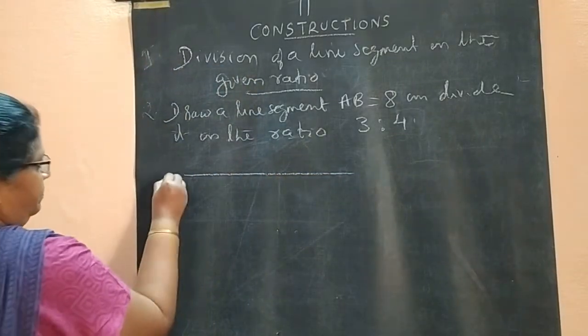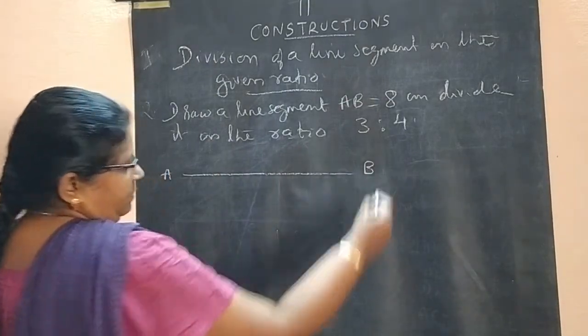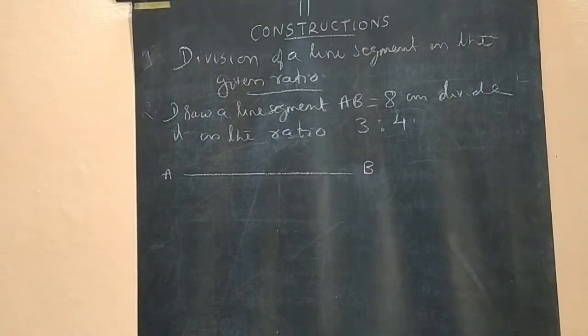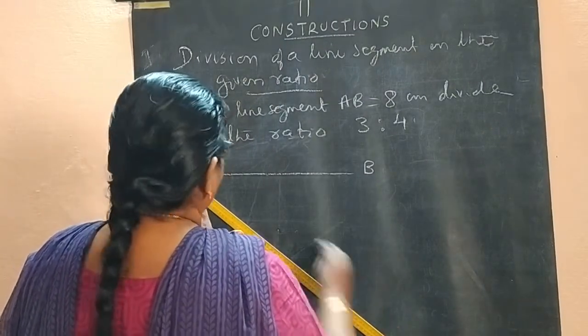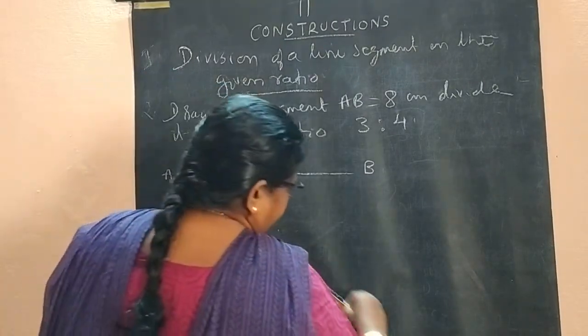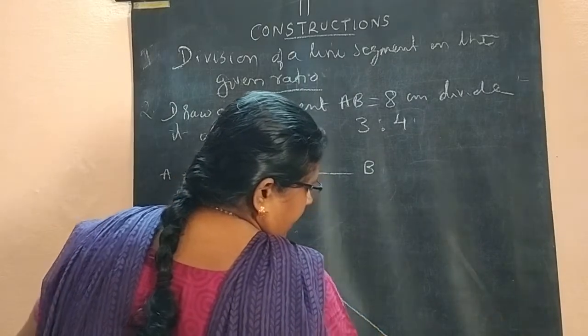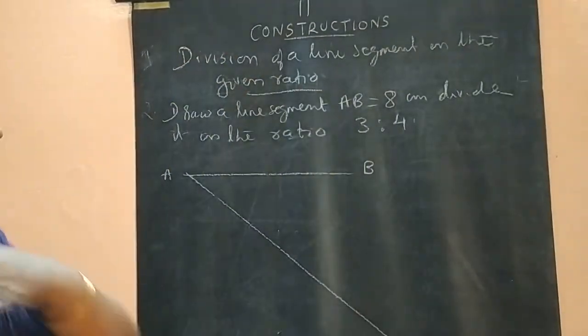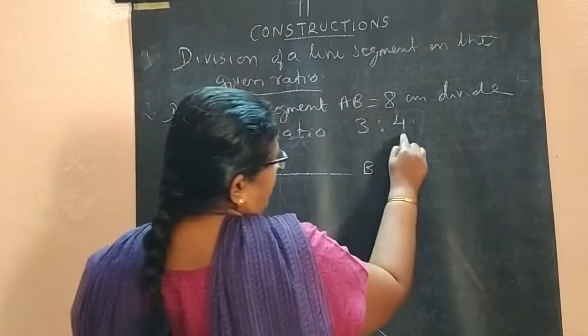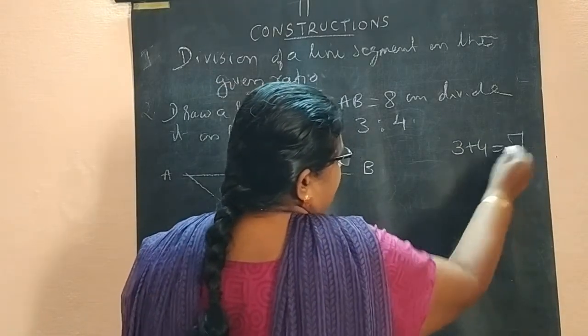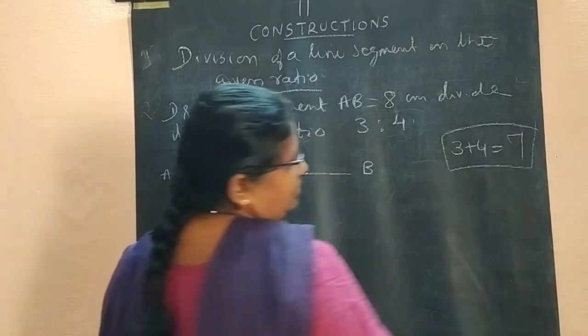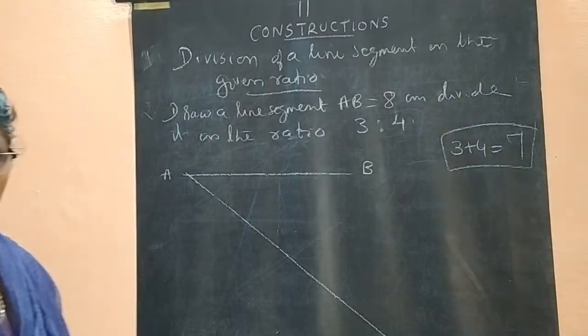AB equal to 8 cm. Now what you have to do is from A you draw a ray. Draw a ray AX. Now here the ratio is 3 is to 4. So 3 plus 4, 7 parts you have to make.